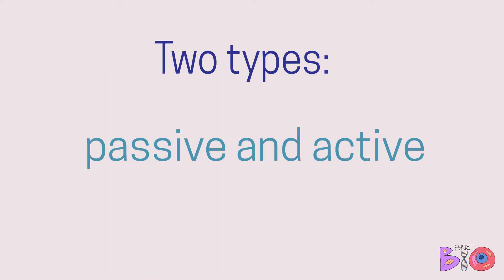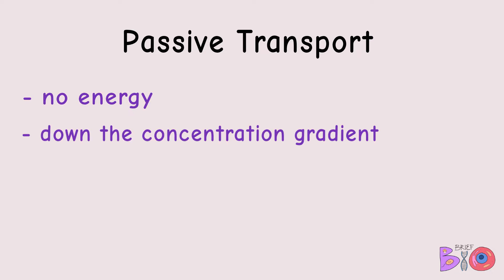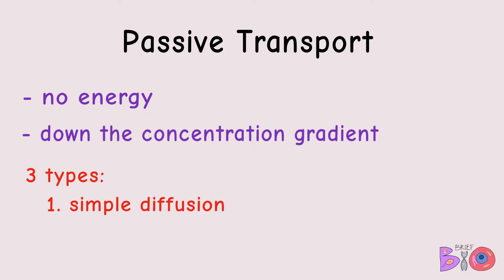There are two main types of cell transport: passive and active. We will start with passive transport. Passive transport is the movement of molecules through the cell membrane without the use of energy. This transport goes from a high to a low concentration — down or with the concentration gradient.